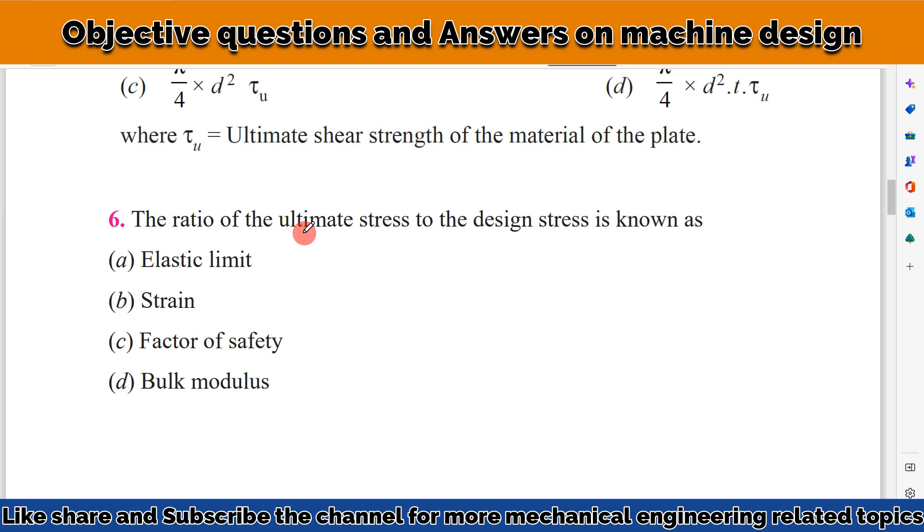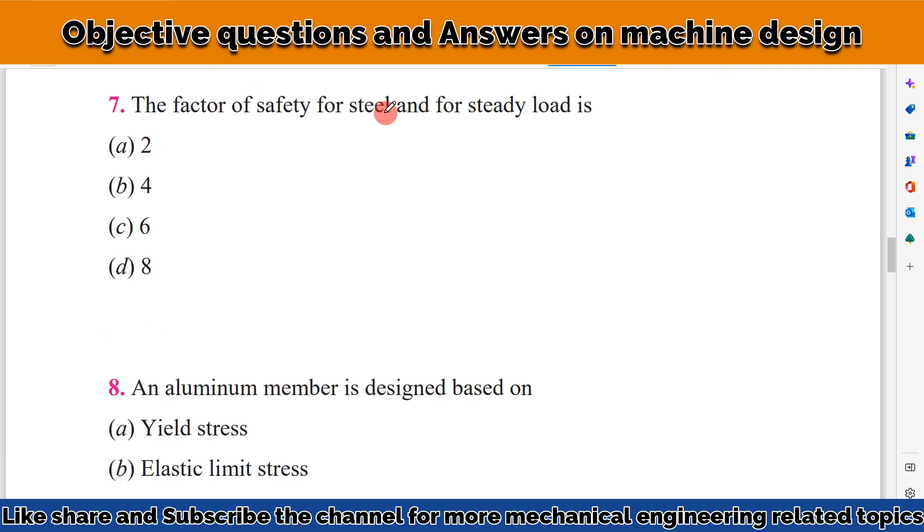The ratio of ultimate stress to design stress is known as? Ultimate stress to design stress is known as the factor of safety.